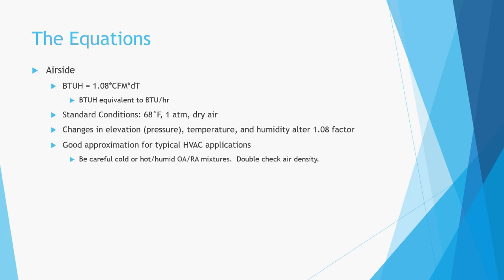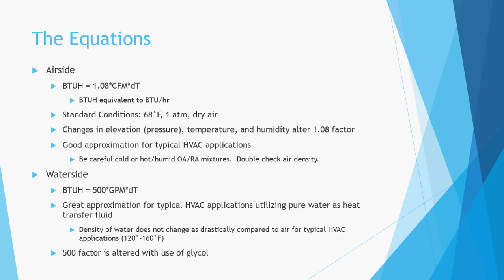We will go through an example using the air side equation next, but first let's look at the water side equation. BTUH equals 500 times GPM times delta T. This is similar to the air side equation except the factor is 500 instead of 1.08, and GPM — gallons per minute — is used instead of CFM. This equation is a great approximation for typical HVAC applications using pure water as the heat transfer fluid. The major note is that the 500 factor is reduced when using glycol, which is used in northern climates for freeze protection.